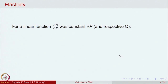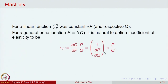For a linear function this was always a constant equal to the slope. For a general price function p = f(q), it is natural to replace delta_q / delta_p by the derivative dq/dp. We assume dp/dq is not equal to 0, so the coefficient of elasticity of demand is defined as (1 / (dp/dq)) multiplied by p/q. This is the definition of the coefficient of elasticity for non-constant functions.